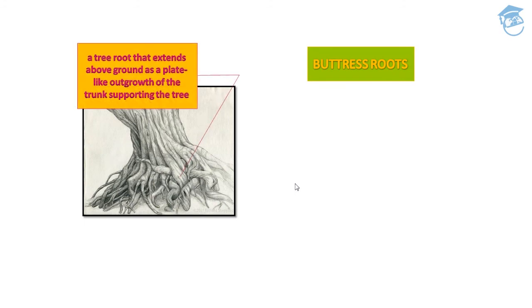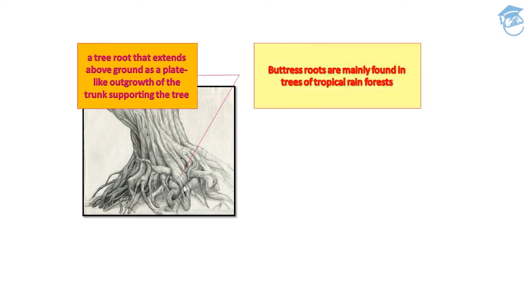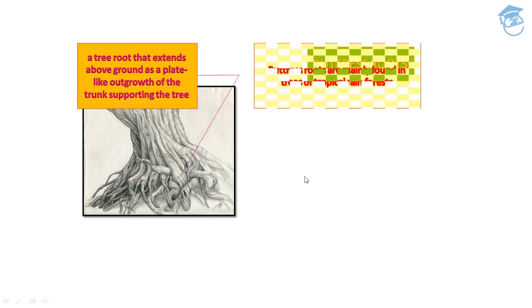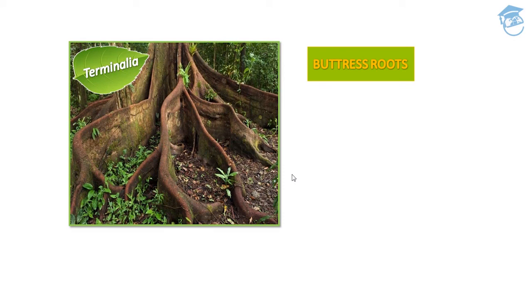Buttress roots are tree roots that extend above ground as plate-like outgrowths of the trunk that support the tree. Buttress roots are mainly found in trees of tropical rainforests. This is a typical representation of a buttress root growing as a plate-like structure. This is seen in Terminalia.